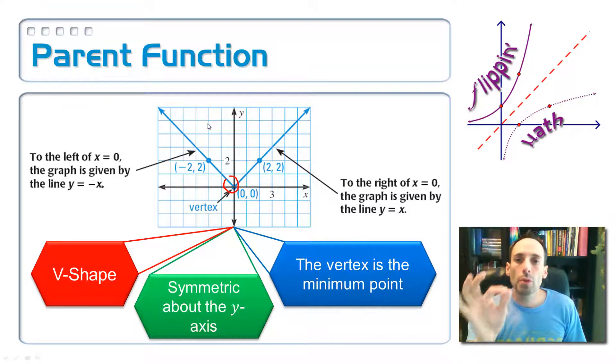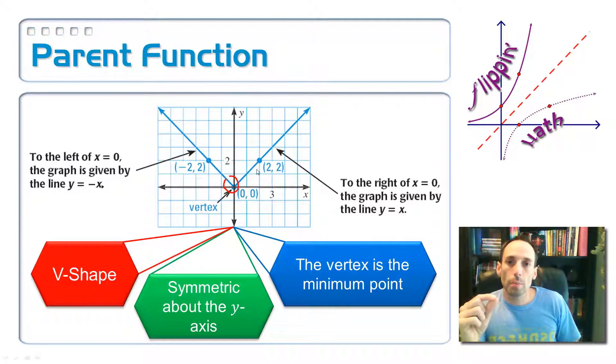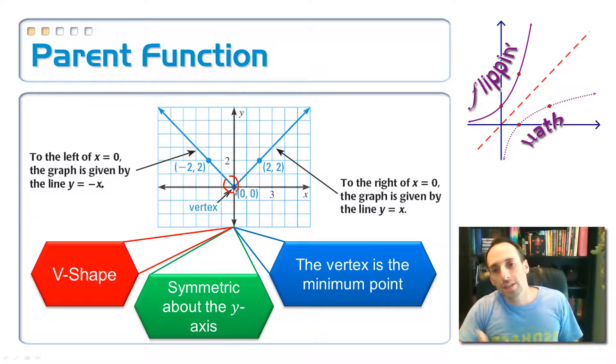So I want you to memorize this shape. The vertex is going to start at 0, 0. And each side, like the right side, is just up 1 over 1, up 1 over 1. This one has the point 2, 2 on it. It would have 3, 3. It would have 4, 4, 5, 5, whatever. And on the left-hand side, it's up 1, left 1, up 1, left 1. So it would have the point negative 2, 2, negative 3, 3, negative 4, 4, and so on.